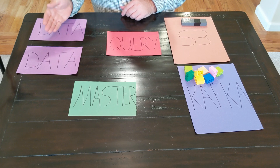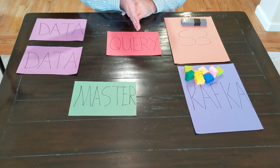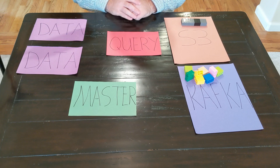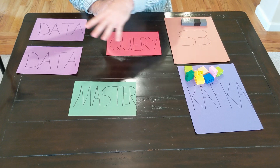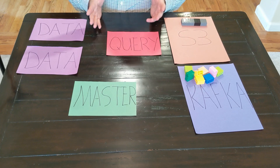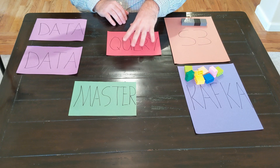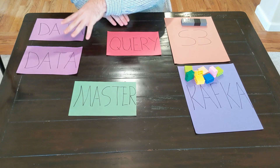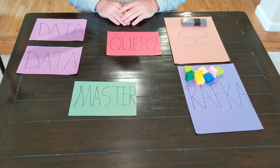These data types are important because when a query actually happens, that data goes from these data server types over to the query server type. Also, although I just have a few cards here, normally in a Druid cluster we would have lots of queries, lots of masters, and lots of data server types all running with their individual processes.